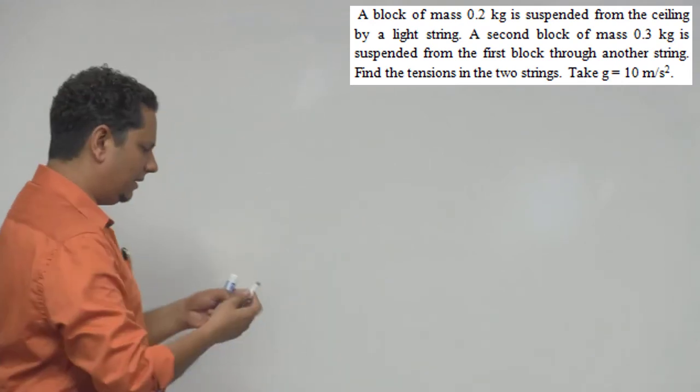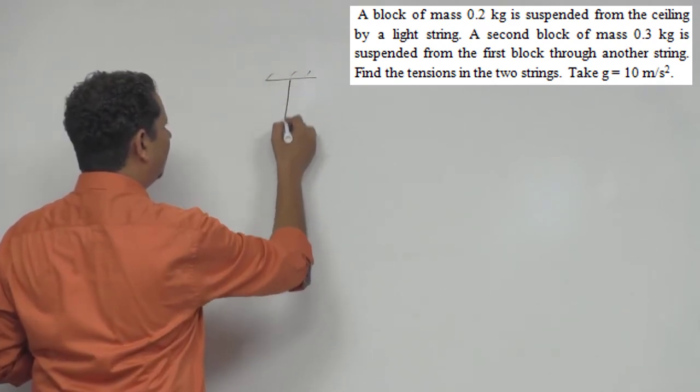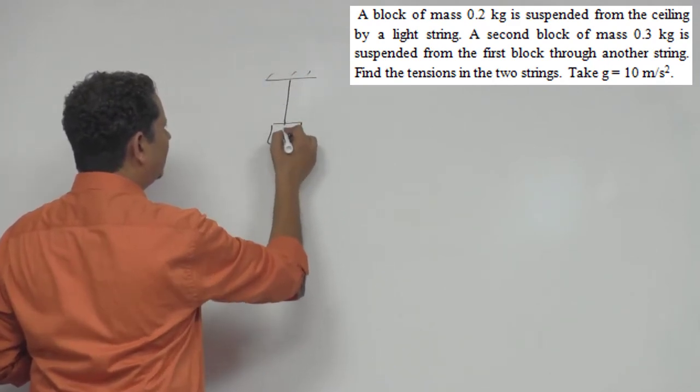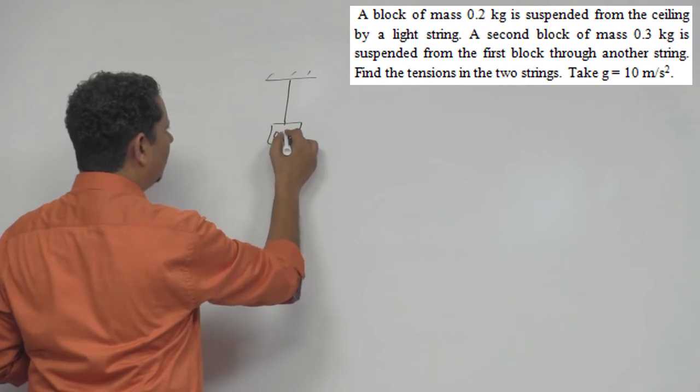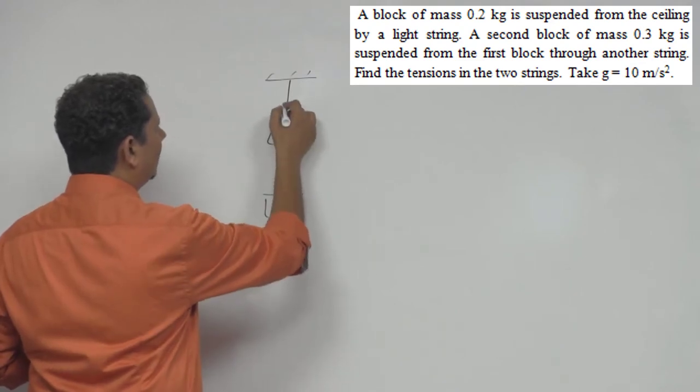So G की value में हम 10 ले सकते हैं. Now, simple सवाल है. The scenario यह है कि यह आपकी एक block, एक रसी है, उस पर आपने 0.2 kg का block ऐसे लटकाया. दूसरी रसी है, 0.3 kg का block ऐसे लटकाया.